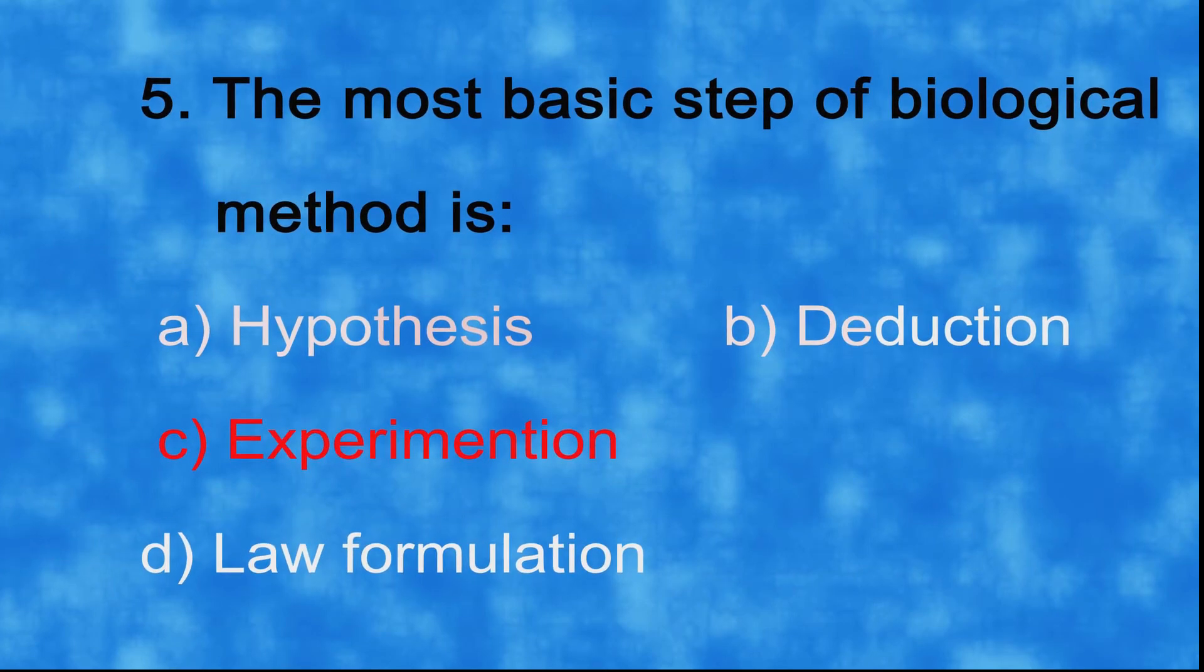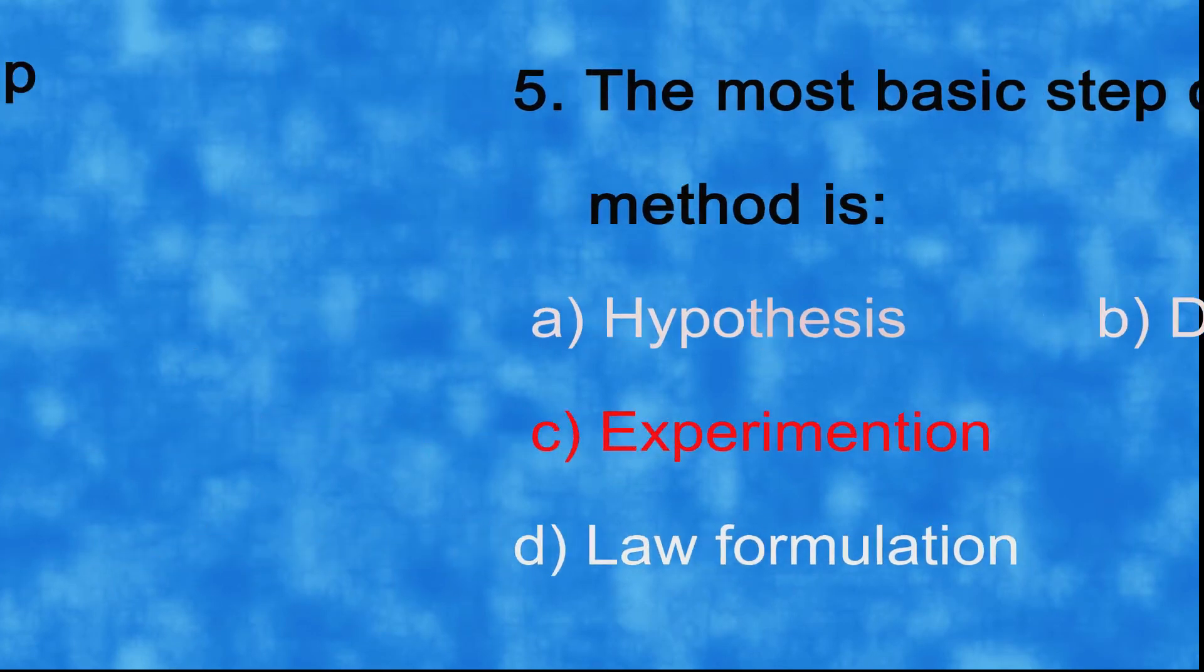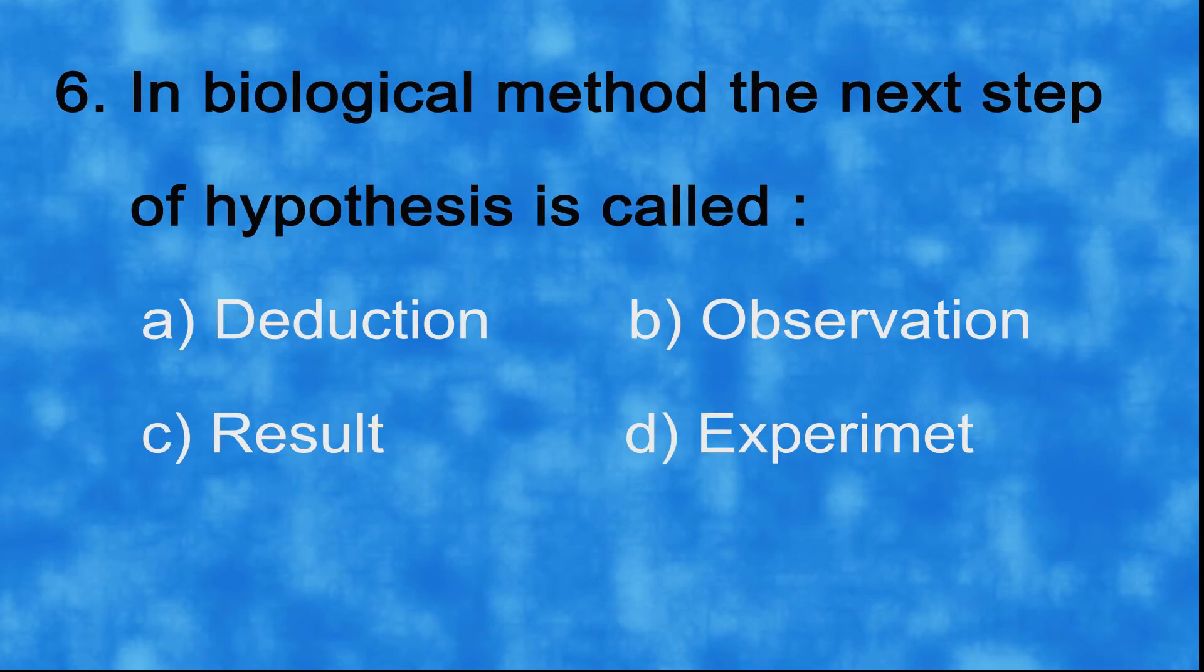And the correct answer is c) experimentation. Number six: in biological method the next step of hypothesis is called a) deduction, b) observation, c) result, d) experiment.